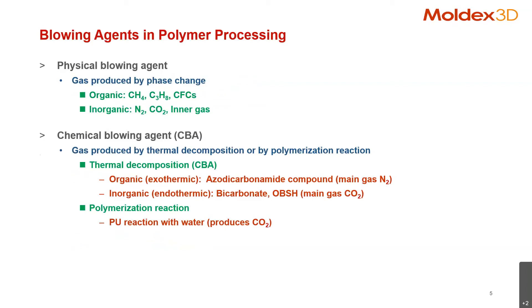When we come to the polymer processing of blowing agents, the blowing agent can be divided into two types: physical and chemical blowing agents. For physical blowing agents, the gas is produced by phase change. The gas will be dissolved into the melt, and then when the pressure of the environment reduces, the gas will be released back into the system, which is foaming.